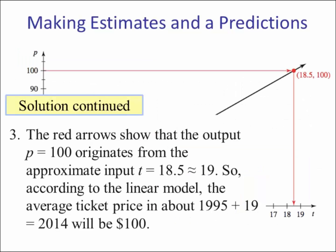Number three. Red arrow shows that the output p equals 100. This time we're given a p, and we're estimating the t, and it looks like about 18 and a half, 18.5, or close to 19. So we say according to the linear model, the average ticket price in 2014 will be about $100.